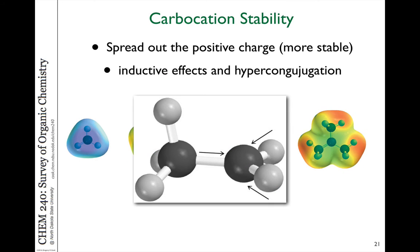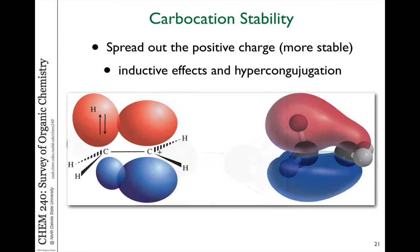Alkyl groups donate electron density slightly through inductive effects and hyperconjugation. If you align bonds with the p orbital, the C-H bonds of the adjacent alkyl group actually donate some of their electron density to that p orbital of the plus charge — that's what helps stabilize the plus charge when you have more alkyl substitution. The general rule to remember: the more highly substituted the carbocation with alkyl groups, the more stable it is. Tertiary is most stable, then secondary, then primary, then methyl as least stable.